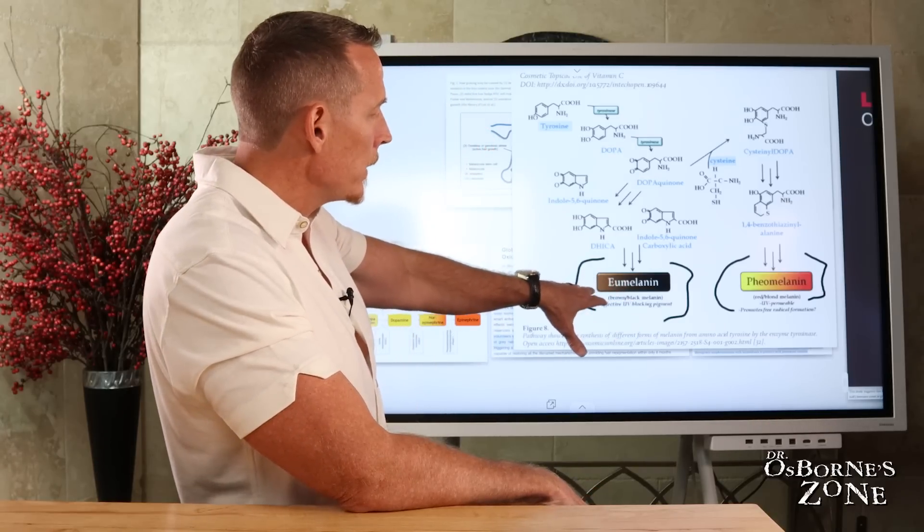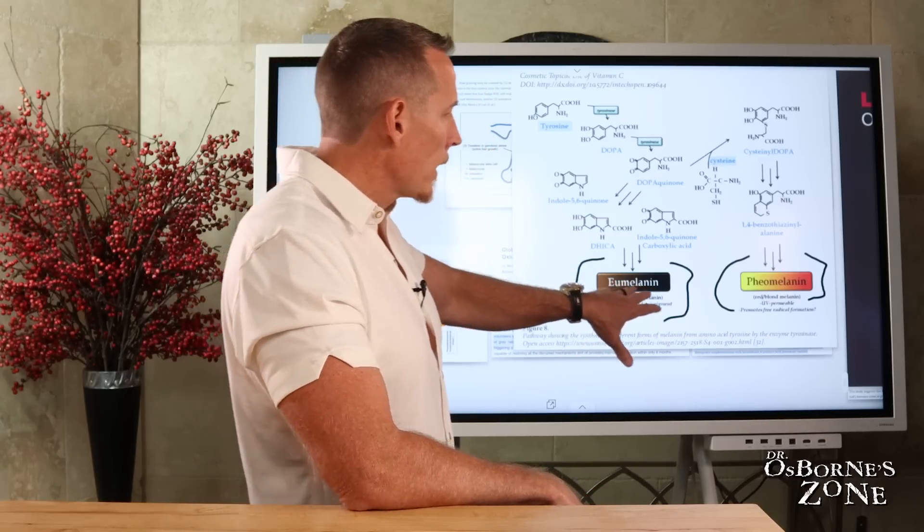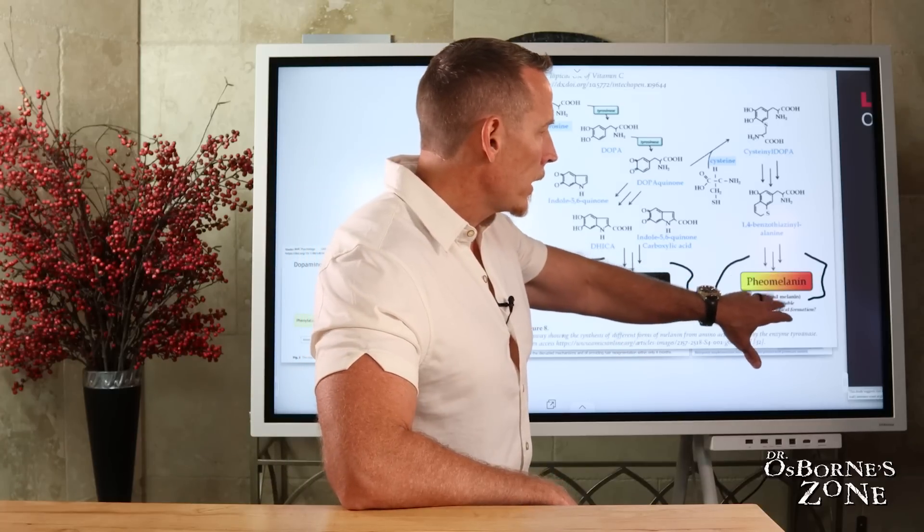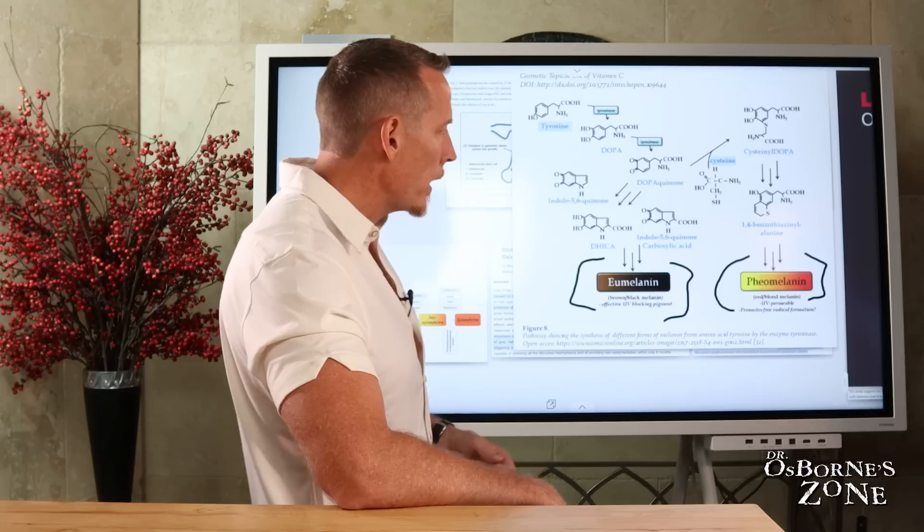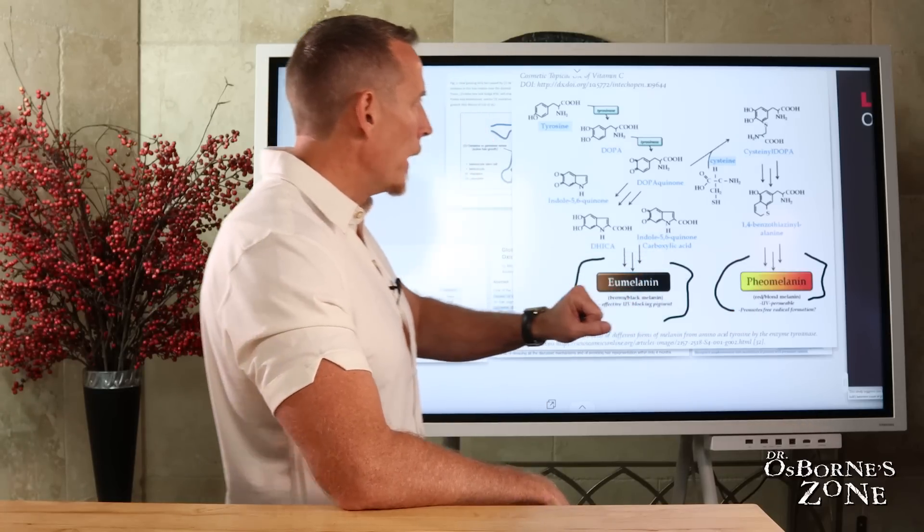Eumelanin is more of the dark pigmented or brown and black coloration, and then pheomelanin is more of the blonde hair or strawberry blonde or red hair. You're going to produce more of this type of pigment.